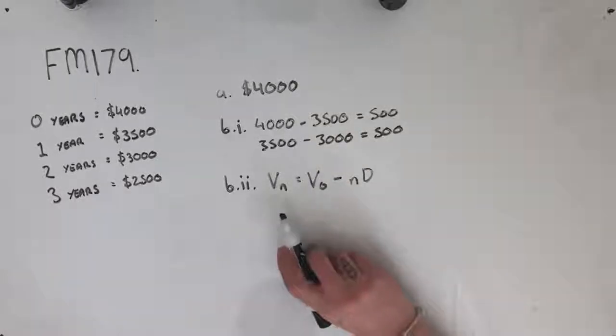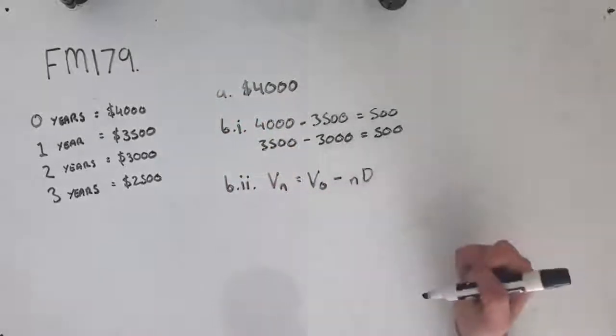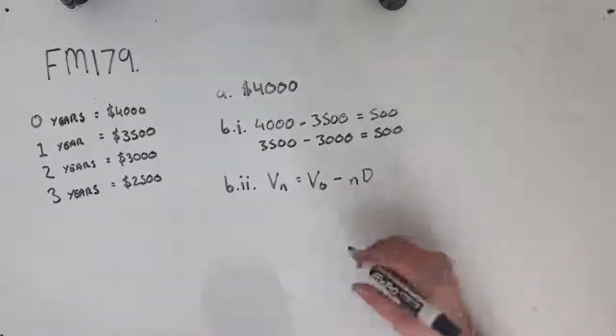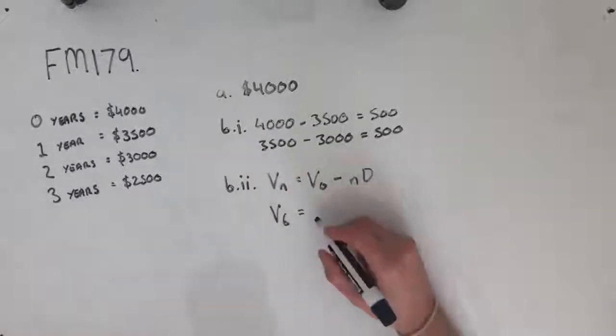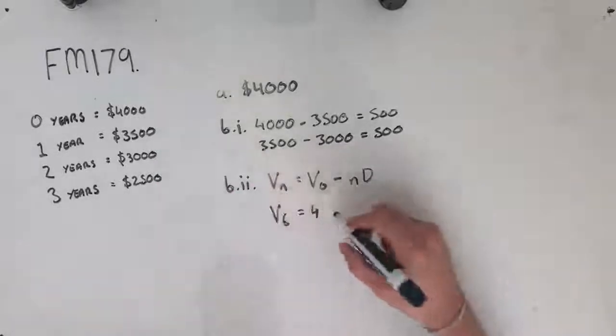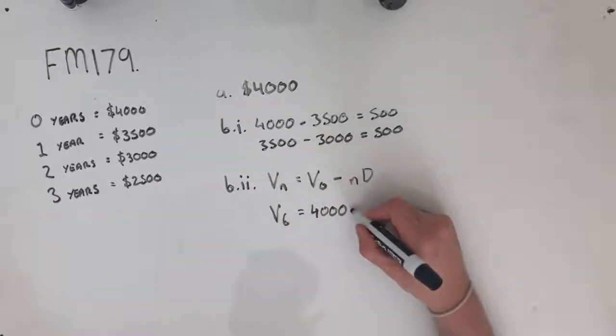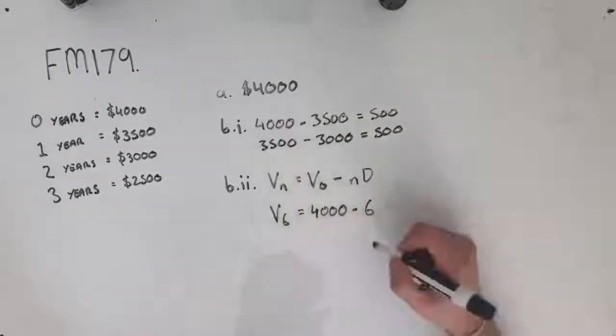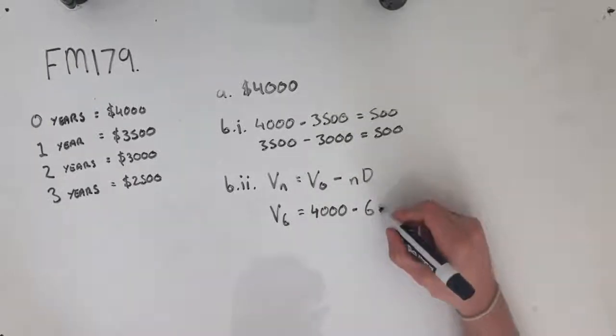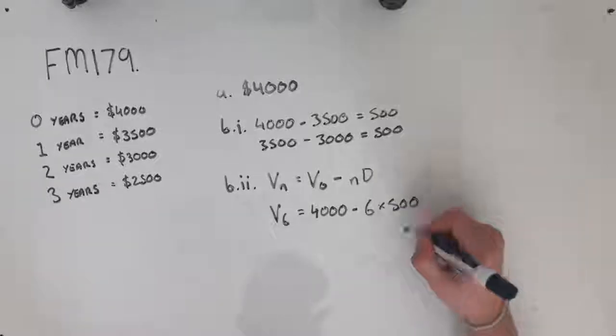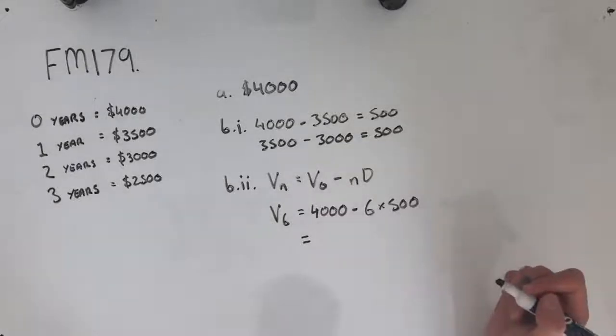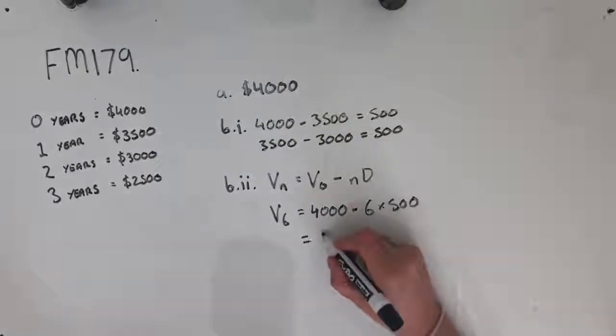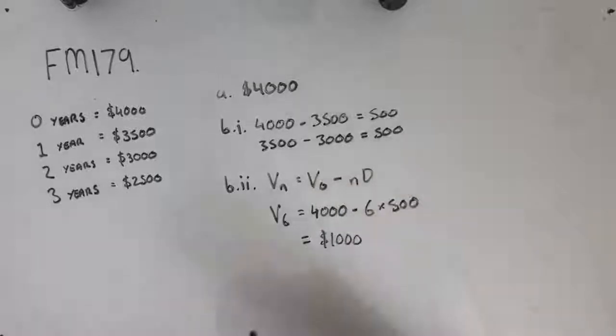Now we're using a minus here because we know that our value here is going to depreciate. It's going to go down, hence the negative symbol there, or the minus symbol there. Now I'm looking for six years after, so I'm looking for V6. Our value of V0, as we saw before, was $4,000. And we're going to minus, we've said that n has a value of six, because we're six years in. Six times 500, because that's how much we're depreciating by each year. So $4,000 minus six times 500 is going to give us a value after six years of $1,000.